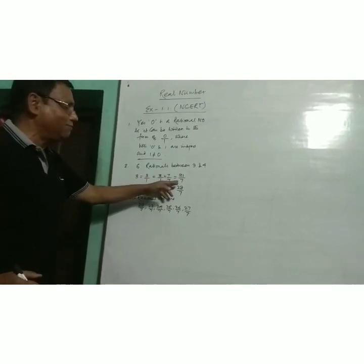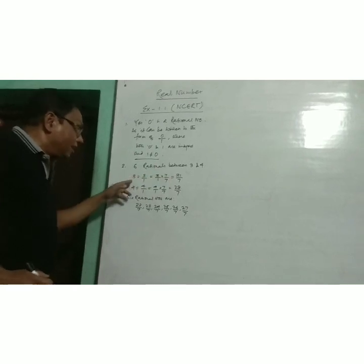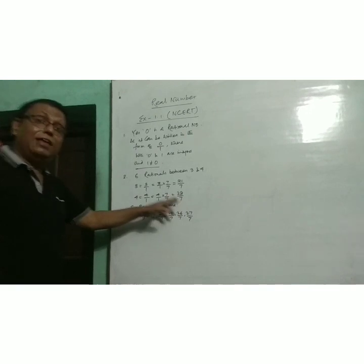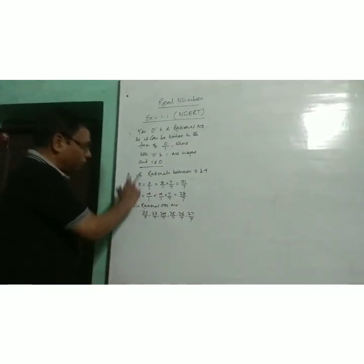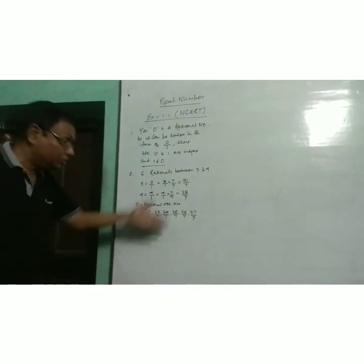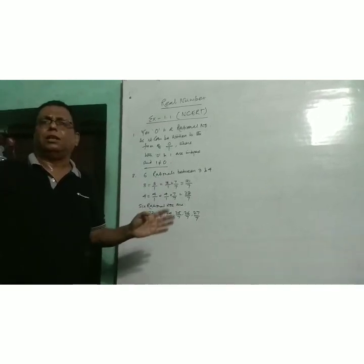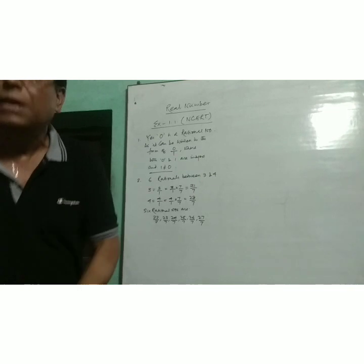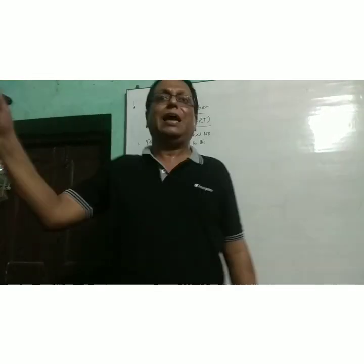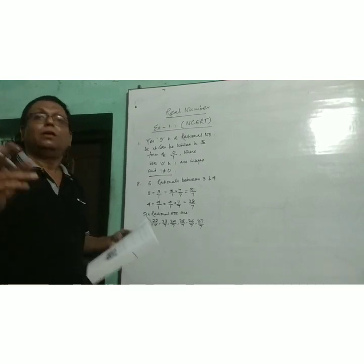If you count, you will find exactly 6 rational numbers between 21 by 7 and 28 by 7. Now, 21 by 7 is actually 3 — it is the equivalent rational number of 3 — and 28 by 7 is the equivalent rational number of 4. Thus we can write these 6 rational numbers between 3 and 4. Likewise, you can find any number of rational numbers between two given rational numbers, as there exist infinitely many.